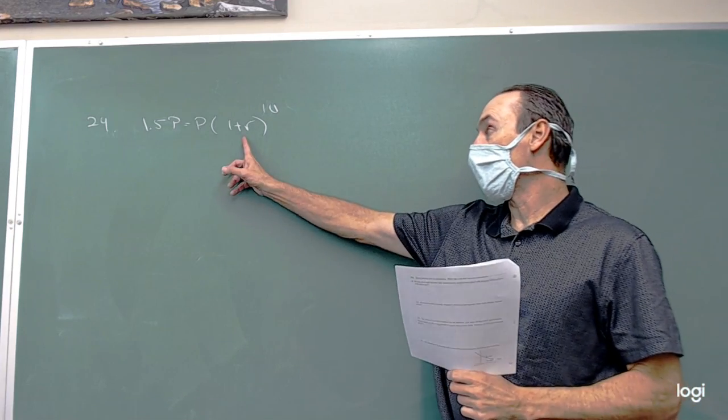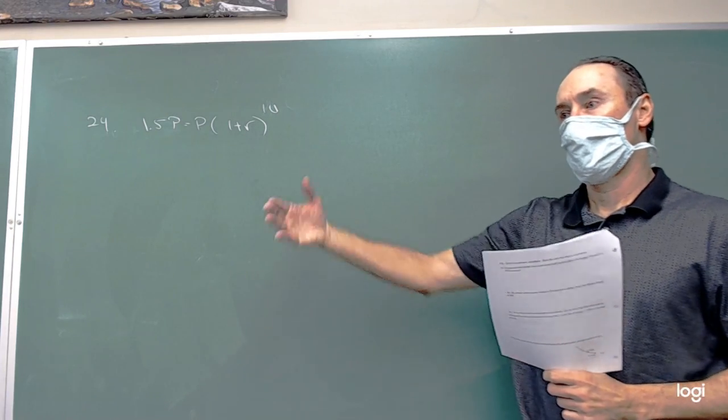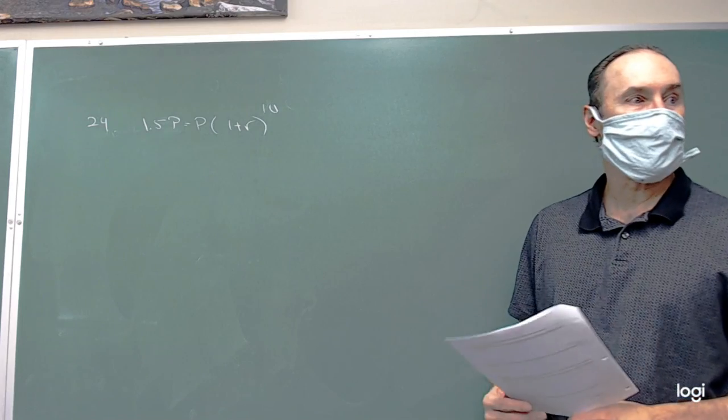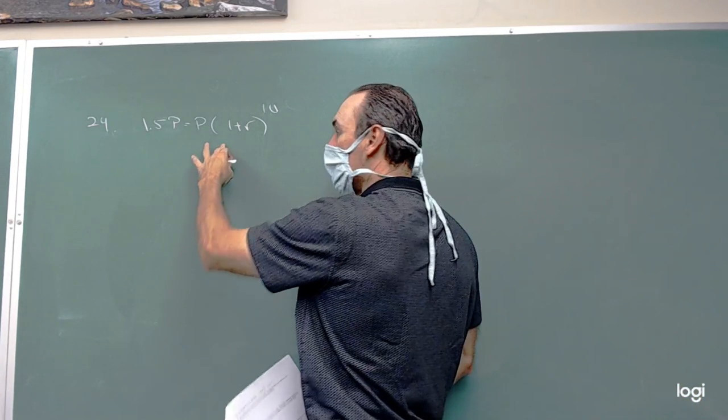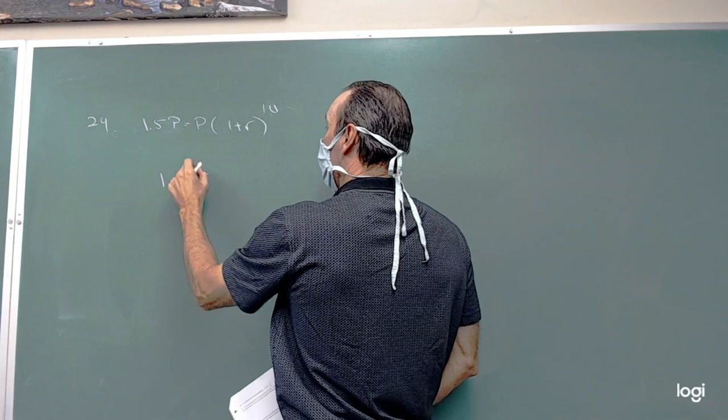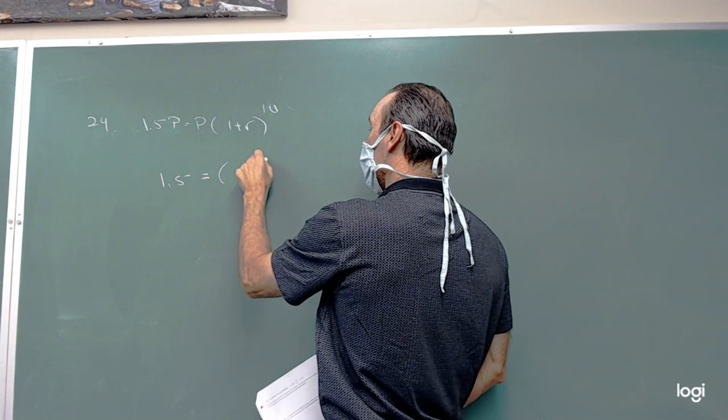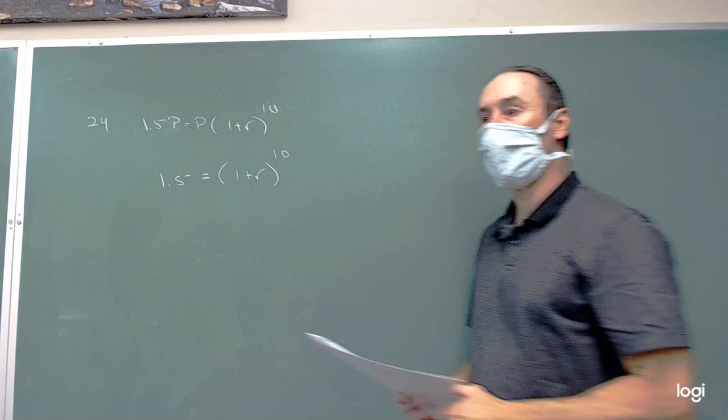We're trying to find what that R is, what that rate is, the percent that it increased by each year. We'll divide the P out, so it doesn't really matter how much you started with. We're looking at 1 plus R to the 10th is equal to 1.5.